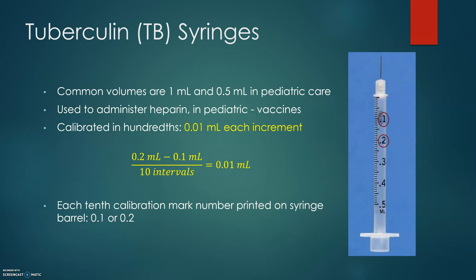Here is the correct way to calculate the size of the increment. You first read the two closest labeled calibrations. The values 0.2 and 0.1 are the closest, and we divide the difference by the number of intervals between them. Since the difference is 0.1 divided by 10 intervals, the answer is 1 hundredth of a milliliter. Each 10th calibration mark is numbered and printed on the syringe.